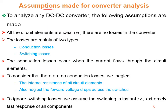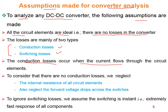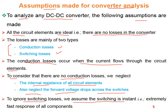Assumptions made for converter analysis: all circuit elements are ideal, meaning there are no losses in the converter. There are mainly two types of losses in DC to DC converters — conduction losses and switching losses. Conduction losses occur when current flows through circuit elements. To assume no conduction losses, we ignore the internal resistance of all circuit elements and the forward voltage drops across the switches. To ignore switching losses, we assume that the switching is instantaneous, meaning an extremely fast response of all components.